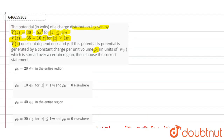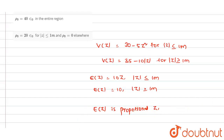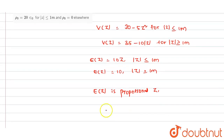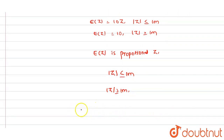Converting the potential distribution into electric field distribution: for |z| ≤ 1 m, E(z) is proportional to z, indicating a continuous charge distribution. For |z| ≥ 1 m, E(z) is constant. We consider a cylindrical Gaussian surface and apply Gauss's law.